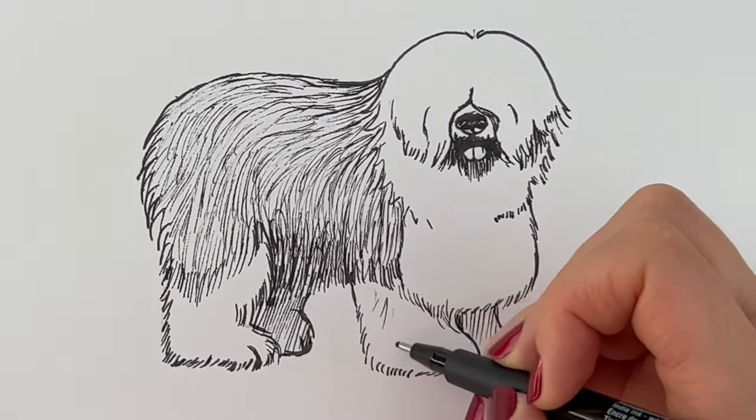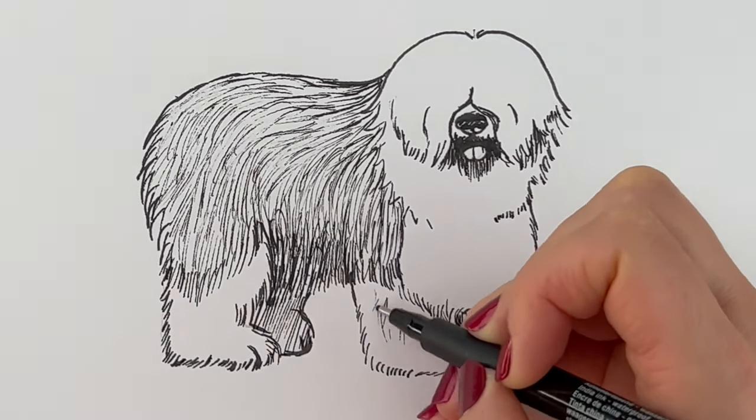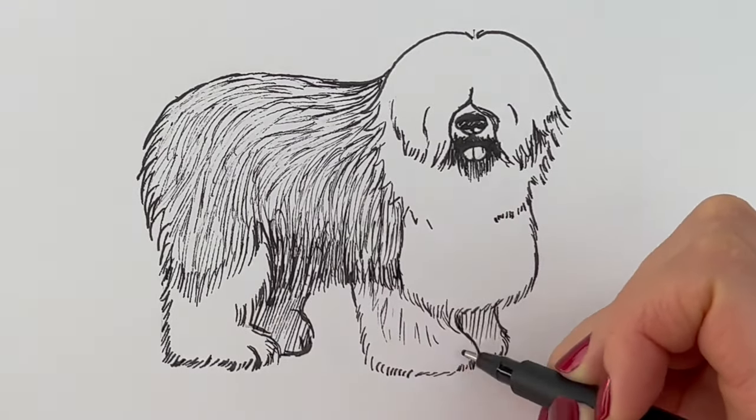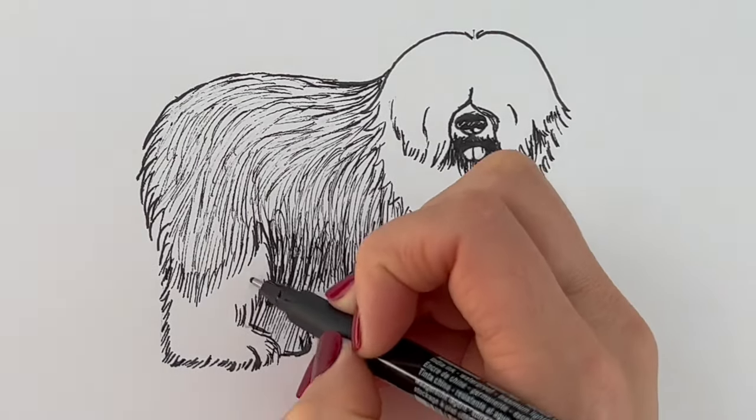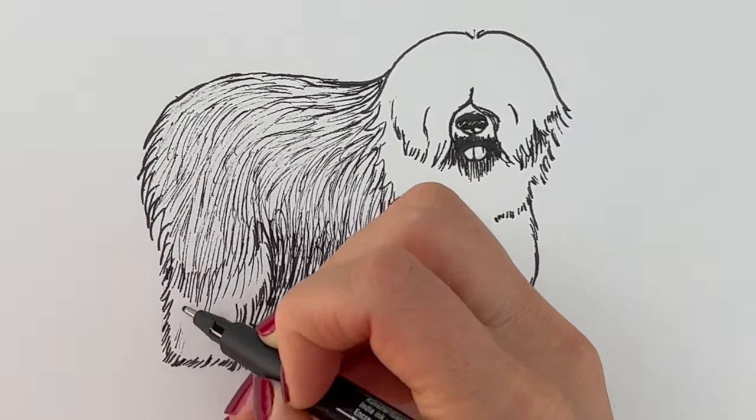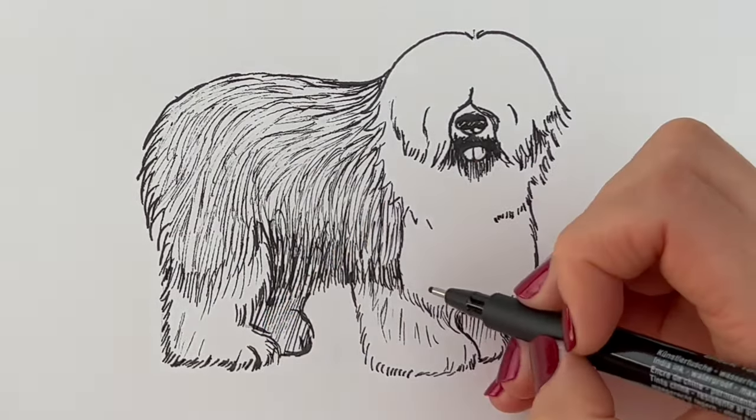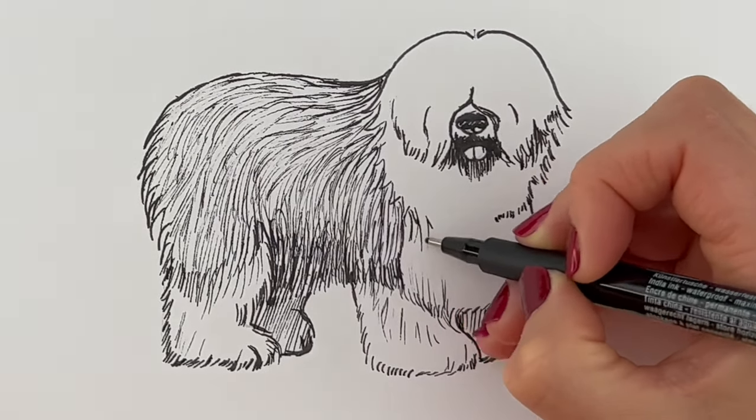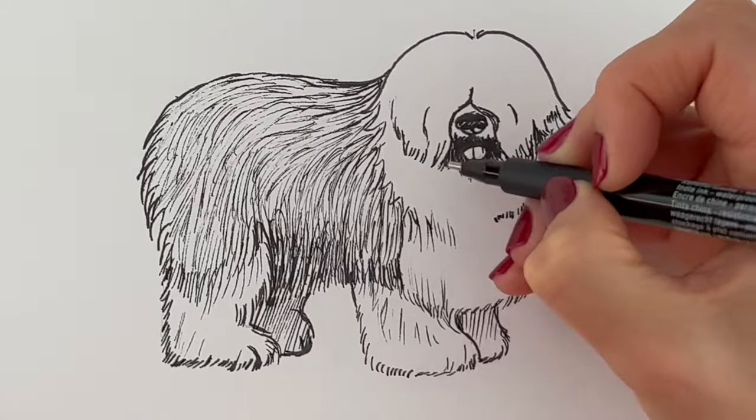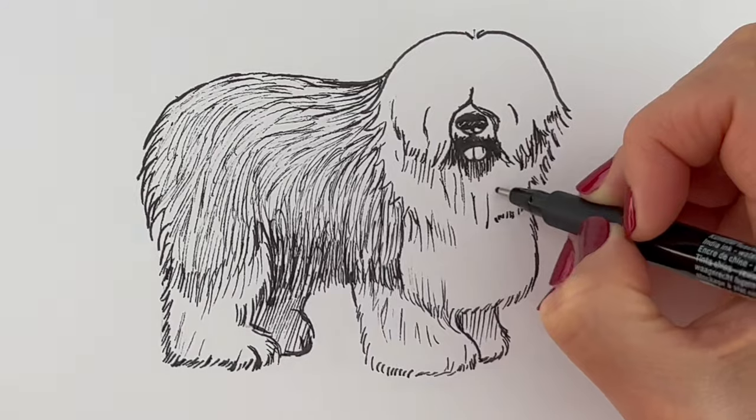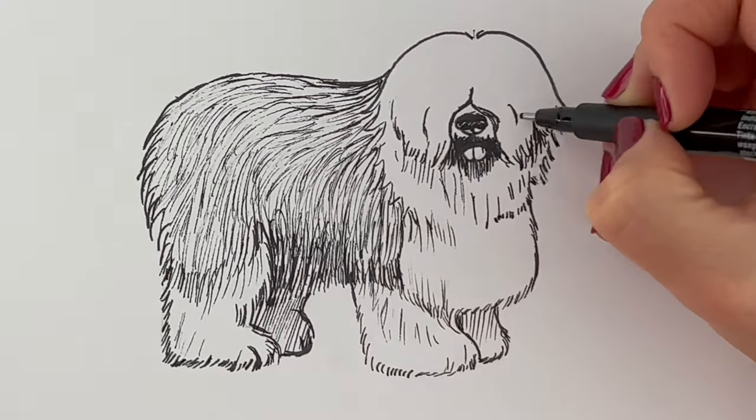I'm just going to add a couple of little dashes here just to show that it's super furry. There we go. And again here. And then also on this part. I'm just adding a few dashes here and there just to give the impression of fur. We don't have to go over it all again.